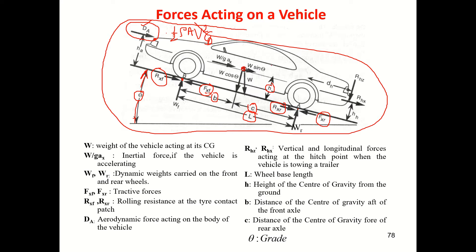Next is the gradient resistance. W is the weight of the vehicle. Drawing one line parallel to the inclined plane and another perpendicular to it — if I resolve W along these lines: the component perpendicular to the plane is W cosθ, and the component along the plane is W sinθ.